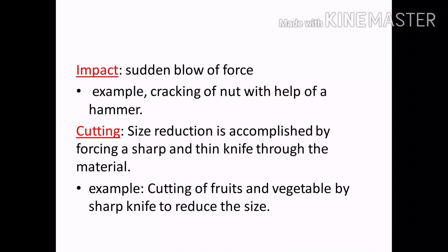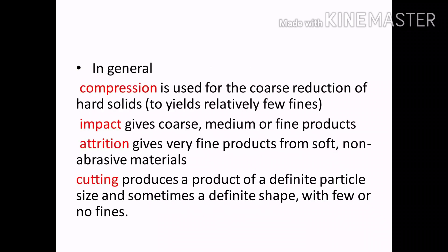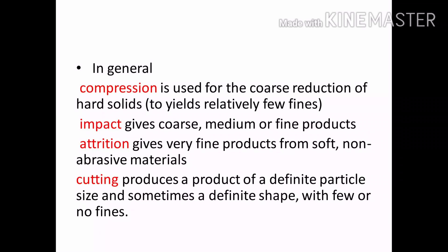Next is cutting. In the cutting area, you can use a sharp knife. You can cut fruits and vegetables with a sharp knife to reduce the size. Compression gives coarse reduction of hard solids. Impact gives coarse, medium, or fine products — three types. Attrition gives very fine products from soft, non-abrasive materials.